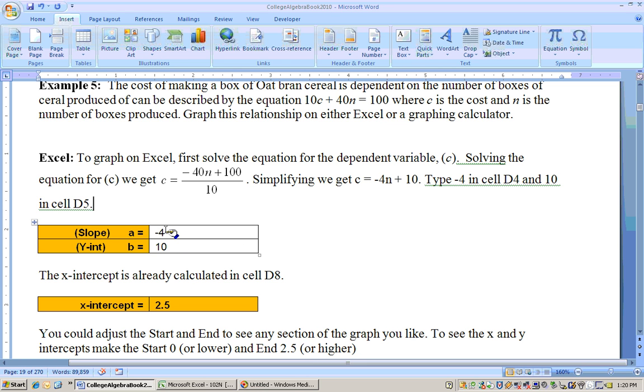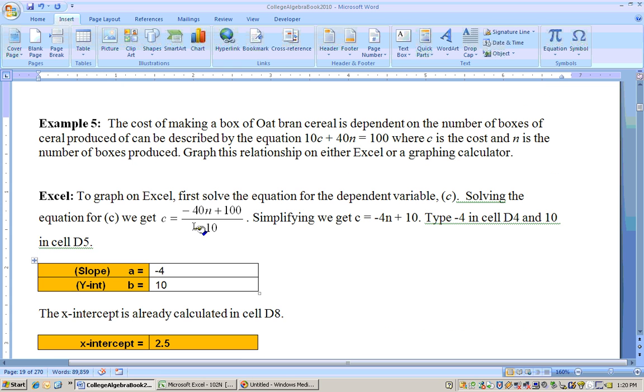If the slope is negative 4, that means for each box you make, the cost is dropping by $4. So maybe this is a little bit outrageous here, but that is actually what it means. And again, we could get the X and Y intercepts this way.